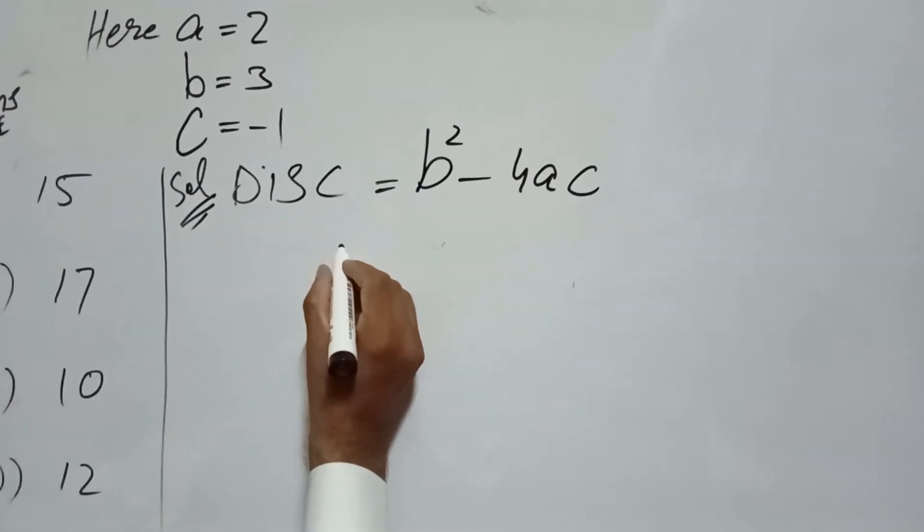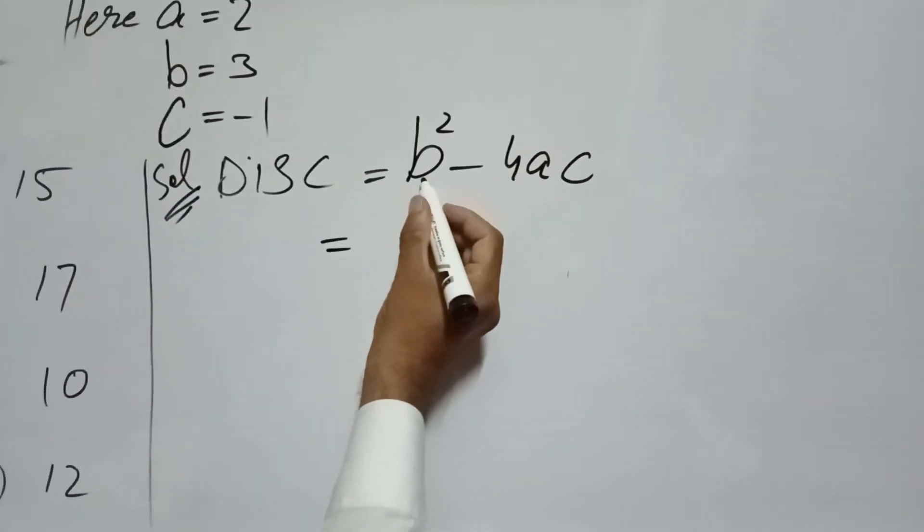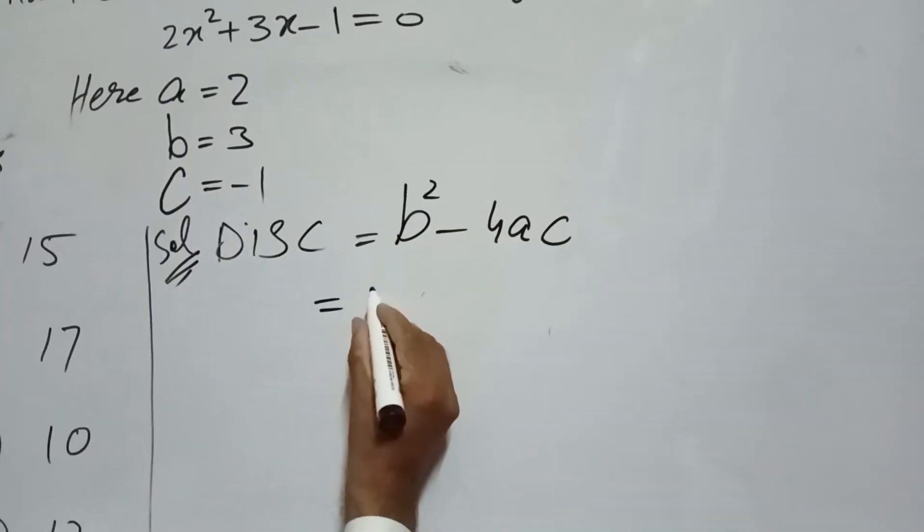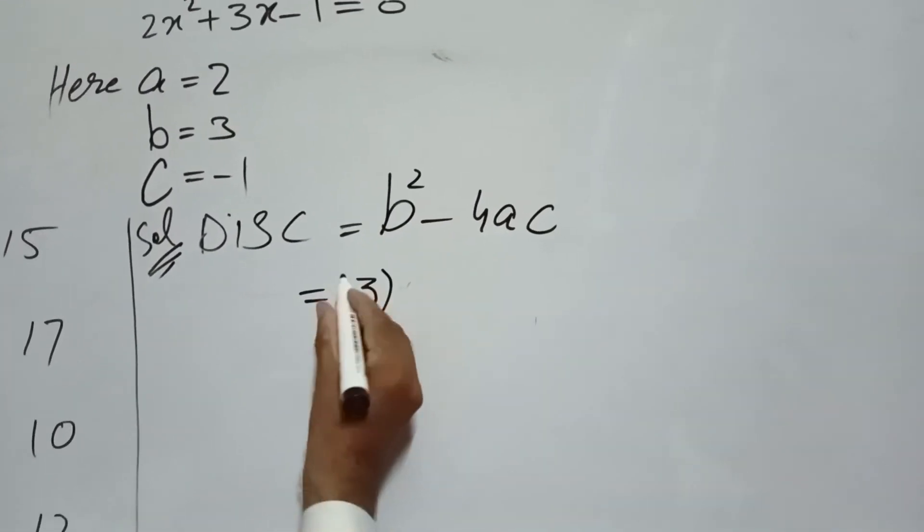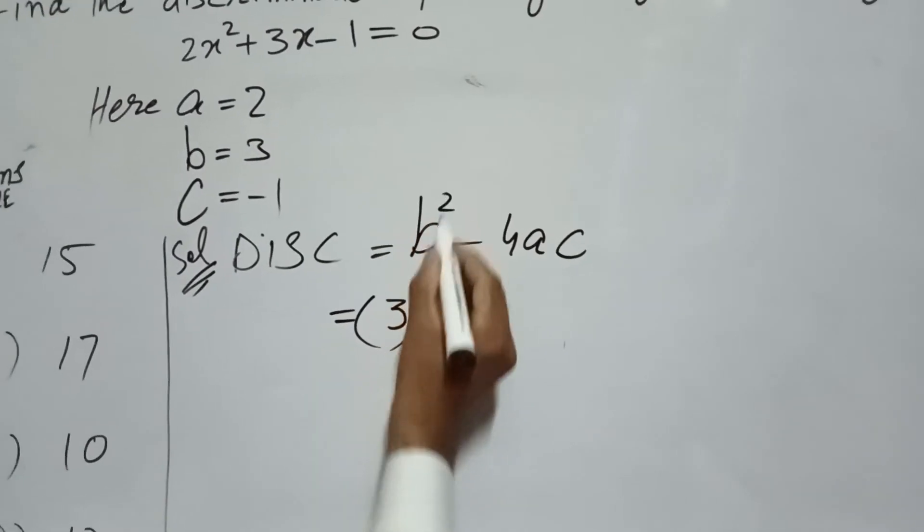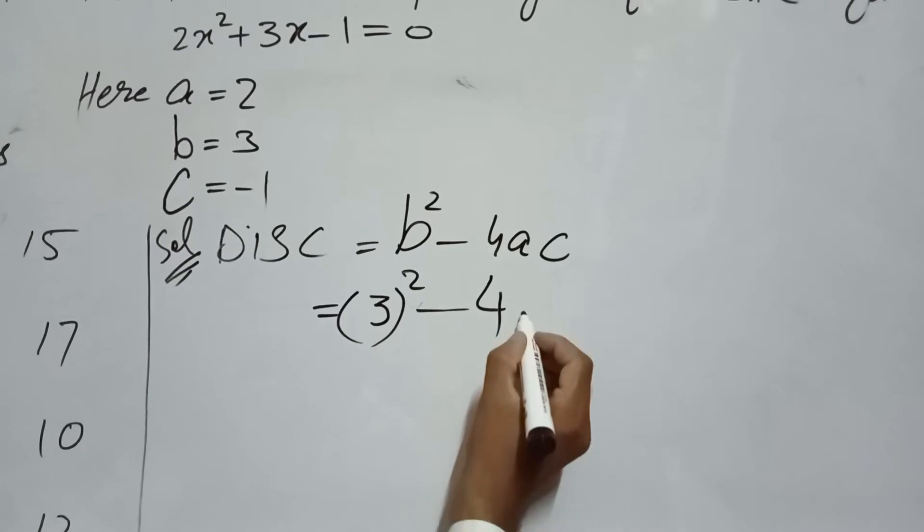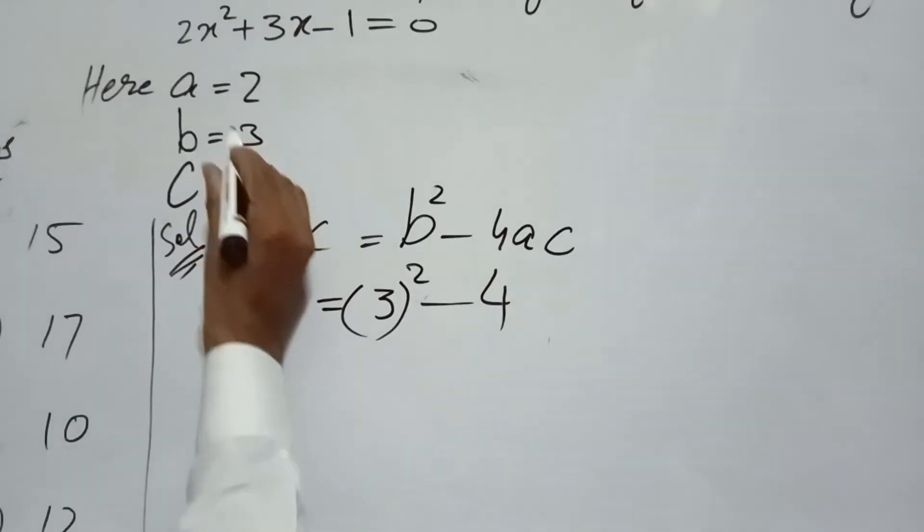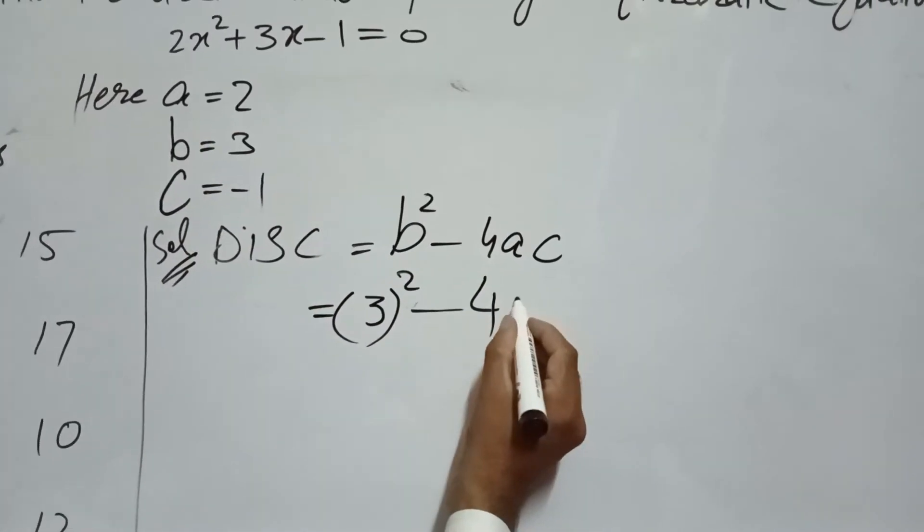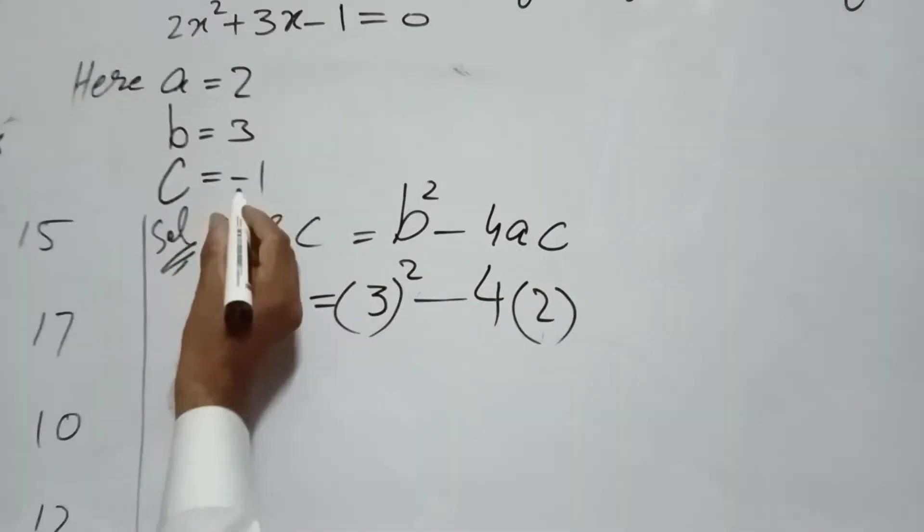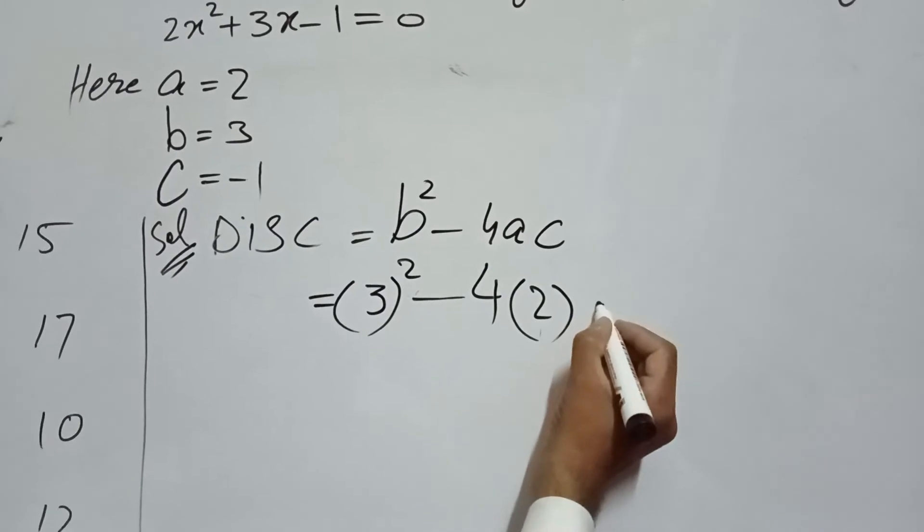So we put values now. B is equal to 3, it means 3 squared. This is b². Minus 4. The value of a is 2, so 2 into 2. And the value of c is minus 1.